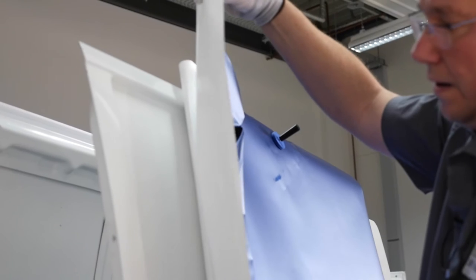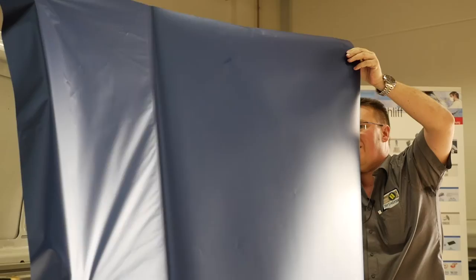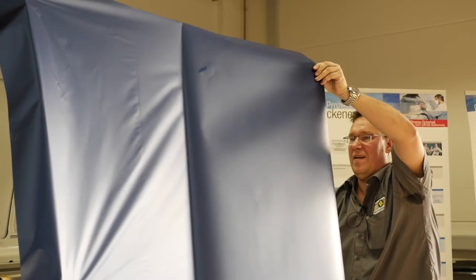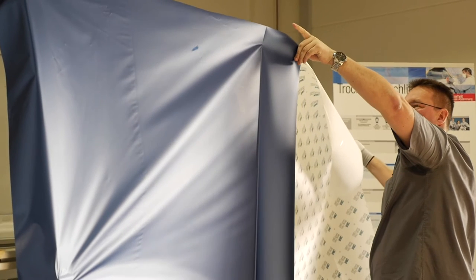Fold the film back and fix it to the side of the panel to prevent it slipping. Remove the magnets and then pull the liner out in one smooth action. This technique helps avoid trapping dust under the film.